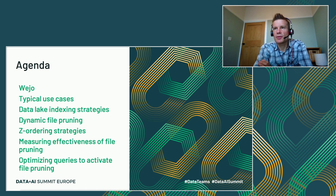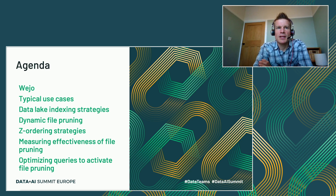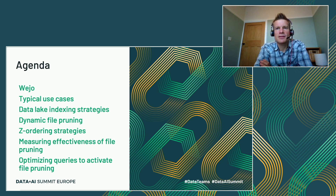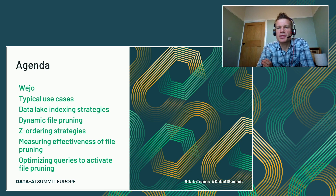So what are we going to talk about today? First, we're going to look at Wejo and what we do. Then we'll look at some typical use cases for geospatial queries within Wejo. We'll look at how traditionally we've been able to optimize the data lake and lay out the data lake to take advantage of indexing strategies. Then we'll move on to dynamic file pruning introduced by Databricks, Z-ordering strategies, how to measure the effectiveness of Z-ordering and file pruning, and finally some caveats around queries that use dynamic file pruning to ensure we get the best performance.